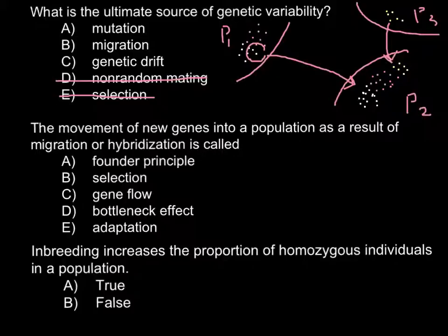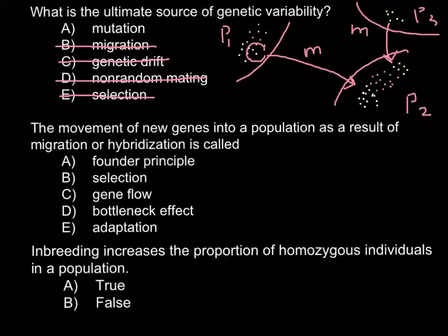As you can see, migration can be a source of genetic variability, but we cannot call it the ultimate source, because these are random events that happen due to migration — it is not a reliable or ultimate source. So we are left with answer A: mutation. Mutation drives all this progress — changes in genes, new alleles arise due to mutation, and new species arise. Mutation is considered the ultimate source of genetic variability, so the answer is A.